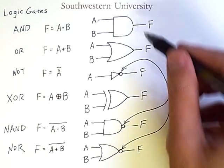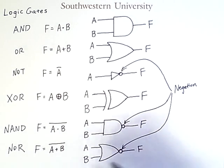So a NAND gate is like an AND gate that's negated. A NOR gate is like an OR gate that's negated. We will learn how to combine these gates in a future video.